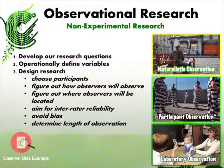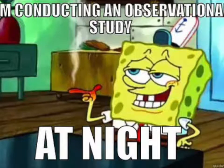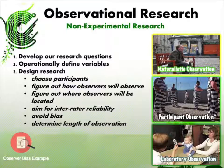Next, figure out how observers are going to observe — sometimes researchers take video, sometimes audio recordings, or they simply sit and record using their naked eye. Then determine where observers will be located: behind a one-way mirror, in the actual setting spread out, or all at the same space so they have the same viewpoint. All of this needs to be determined in advance.